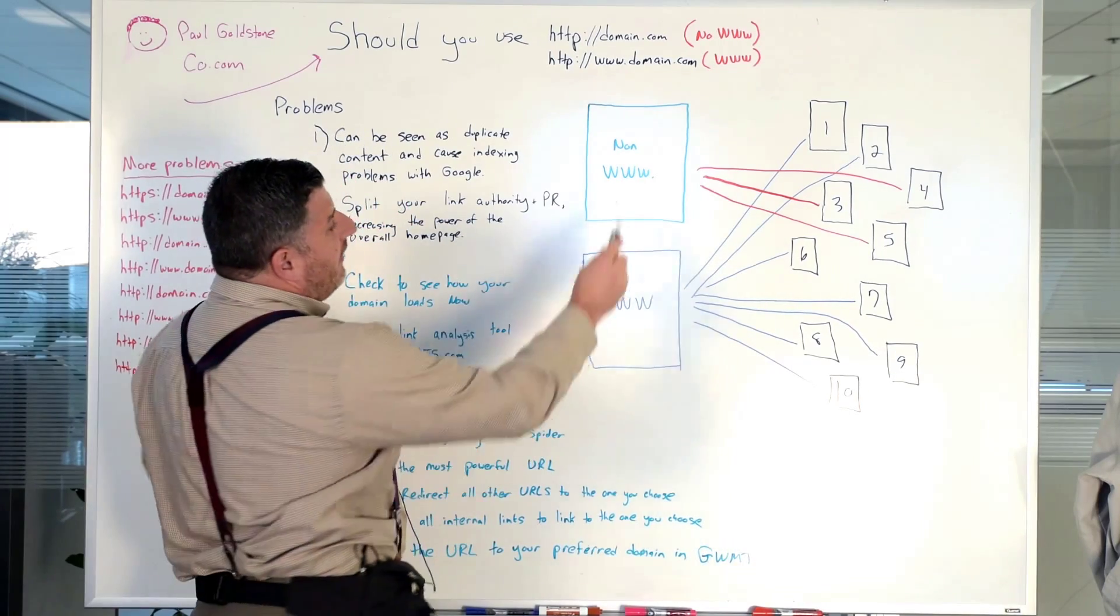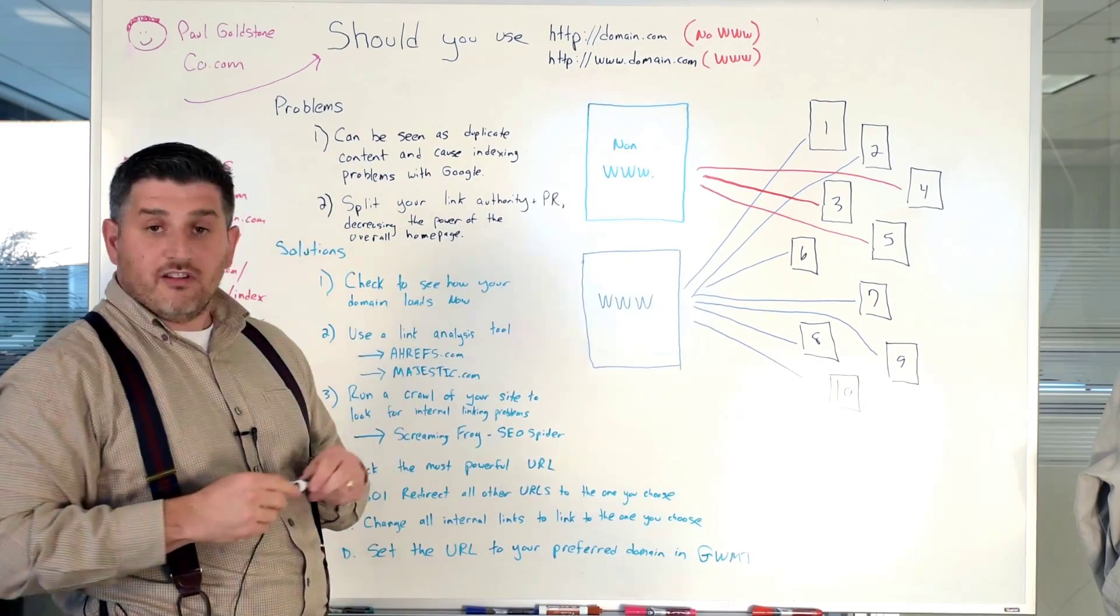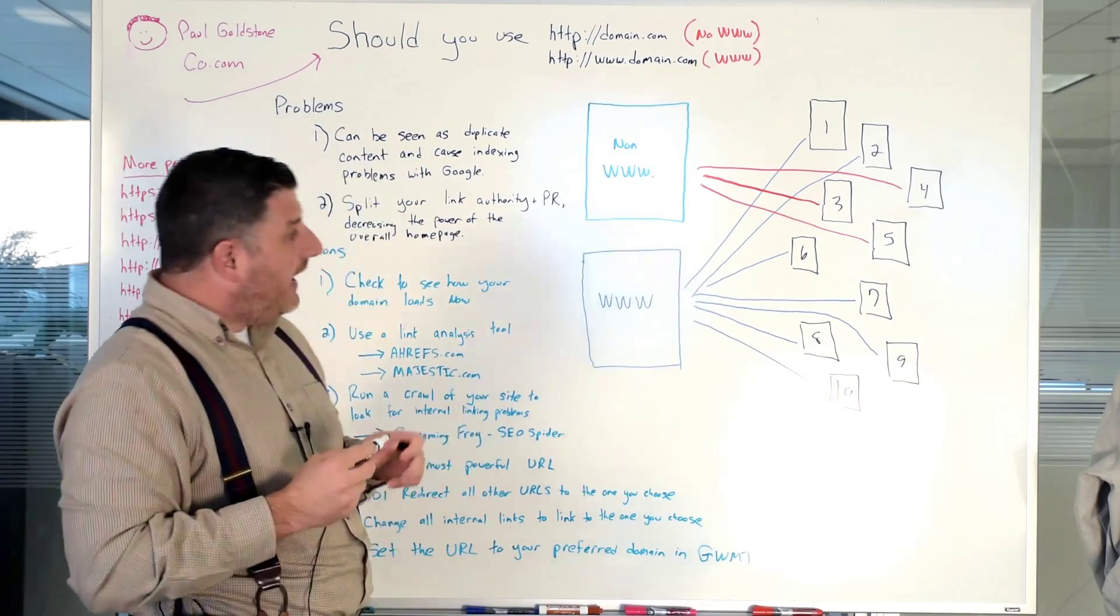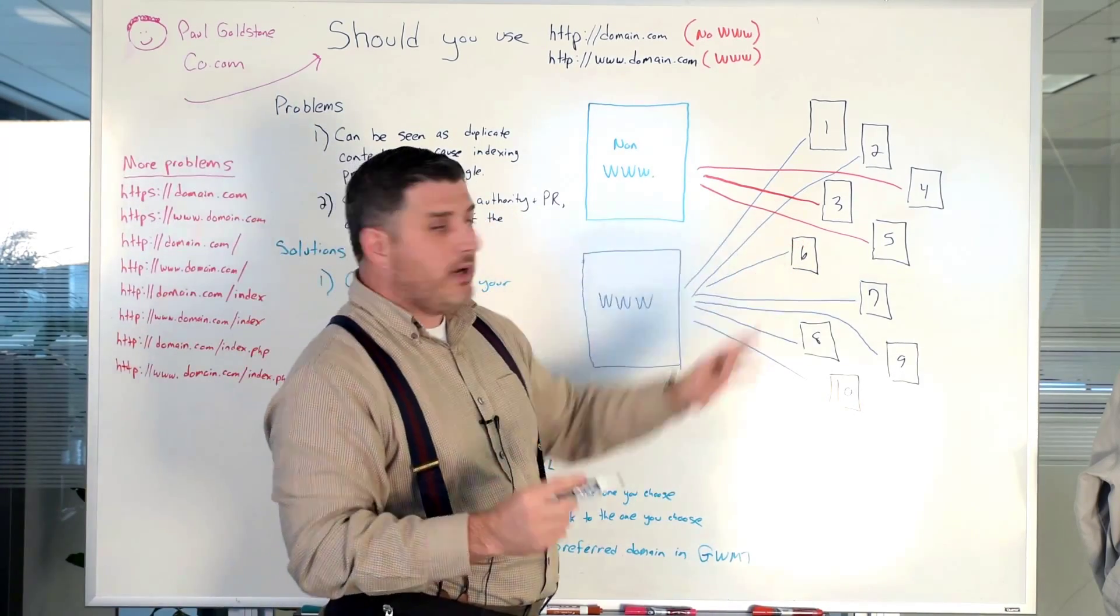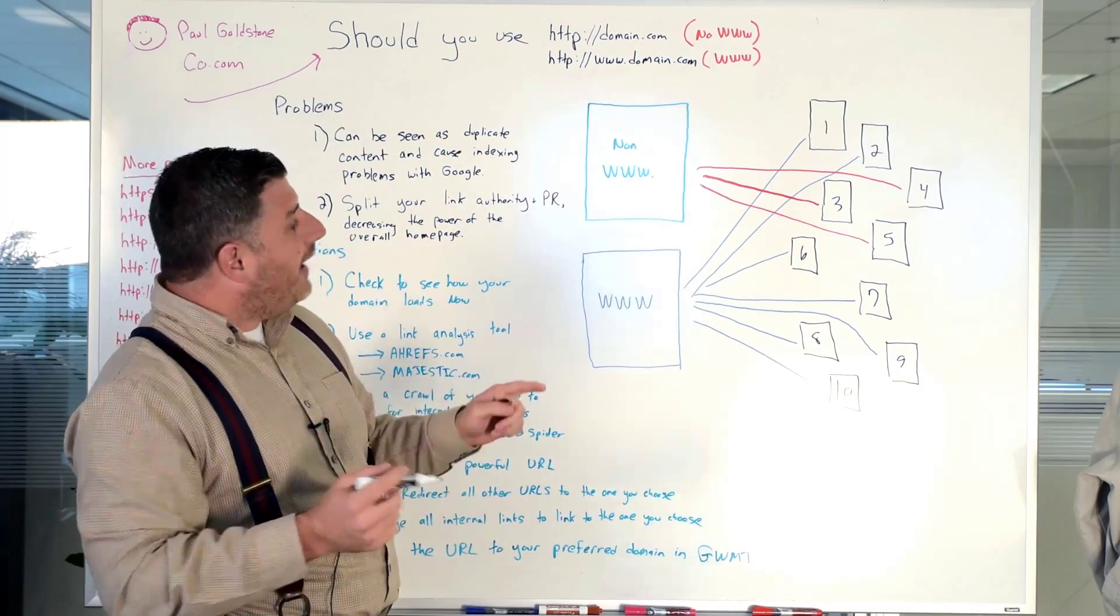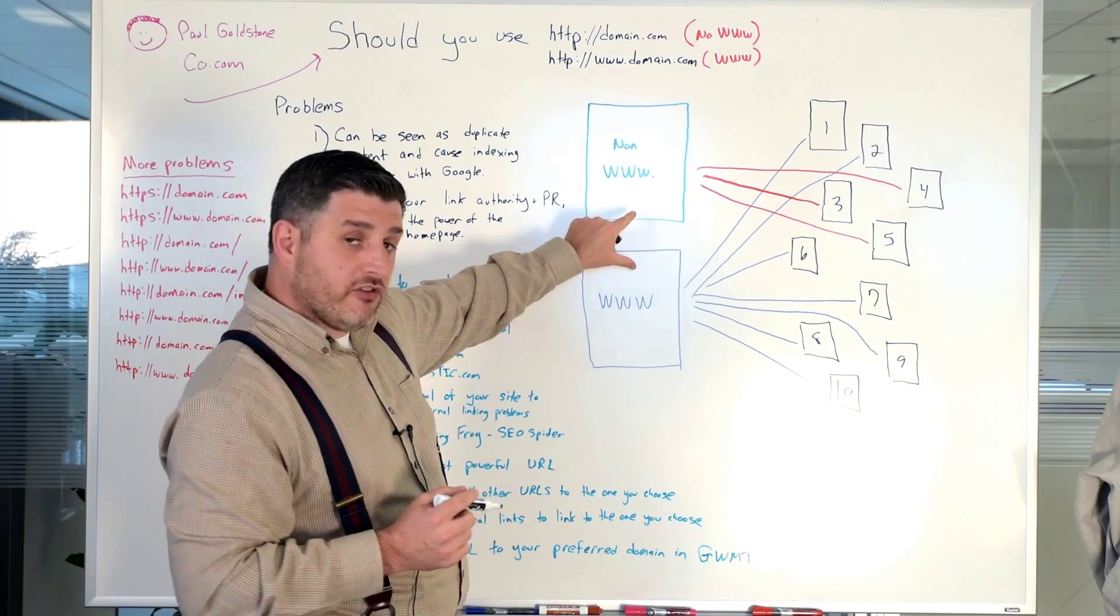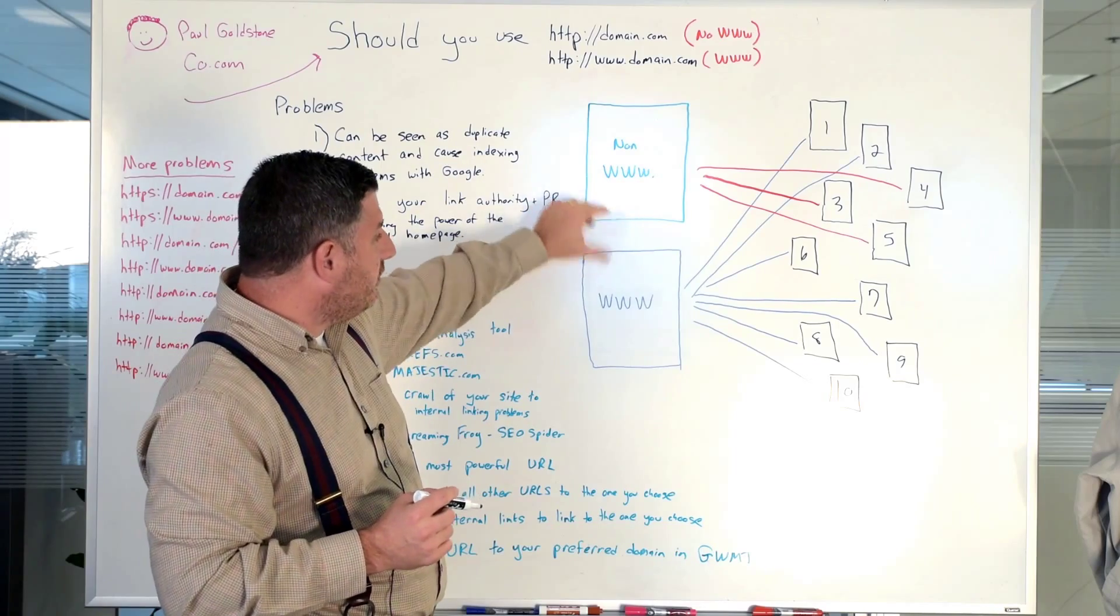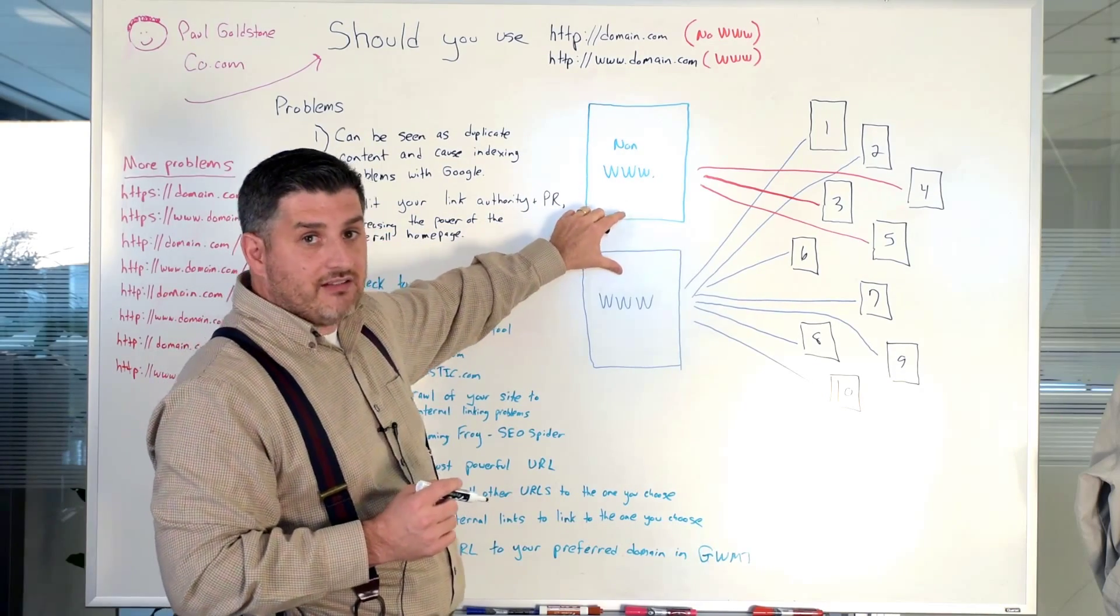So let's just say that you have a non-www page that's loading and then you have the www page that's loading. And so you're out there in the world wide web, you're doing some important things and people are linking back to your website. Well, the problem is that if you have two pages that are loading, you've got a duplicate content problem because Google can see both pages have the exact same content.